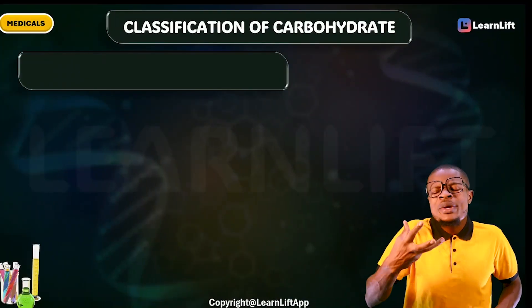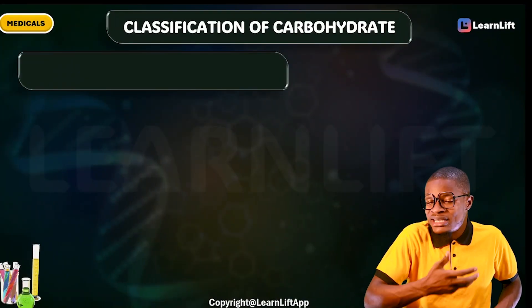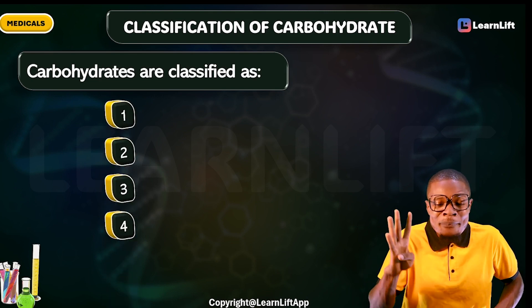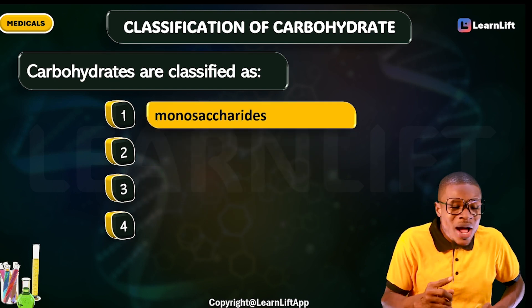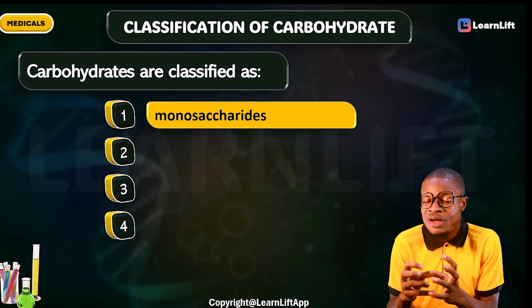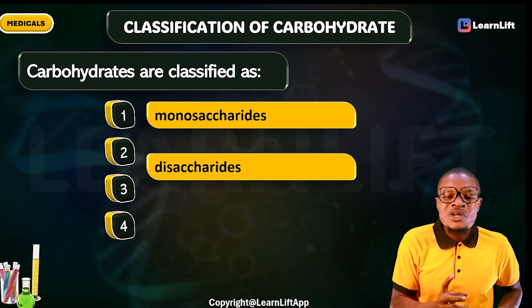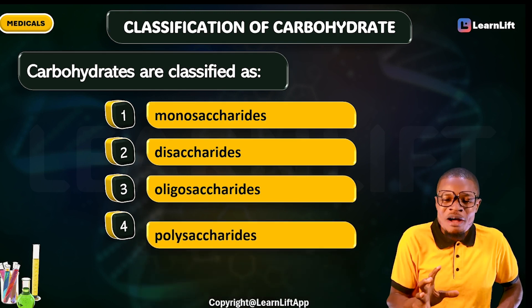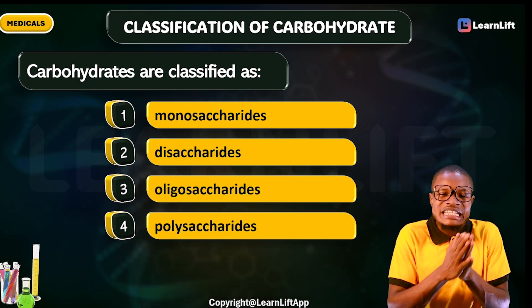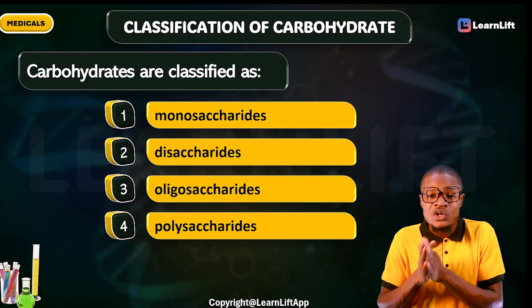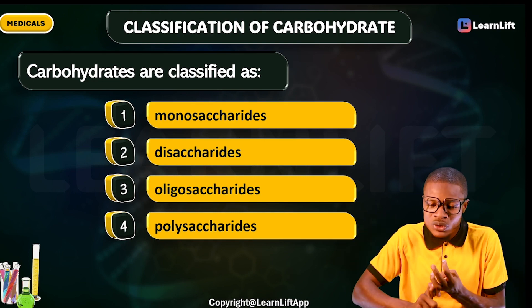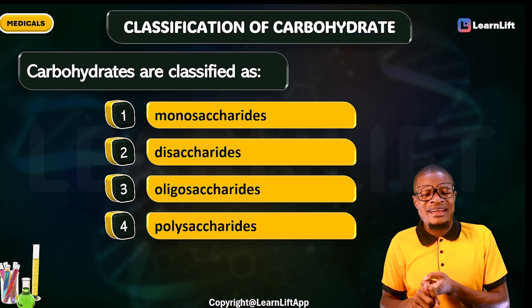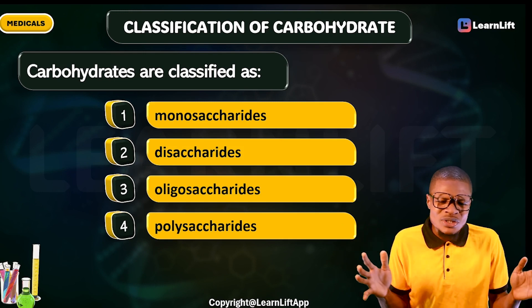How do we classify carbohydrates? There are four major classifications. Number one is monosaccharides — the simplest of them all. Number two is disaccharides. Number three is oligosaccharides. Number four is polysaccharides. These are the four classifications of carbohydrates: monosaccharides, disaccharides, oligosaccharides, and polysaccharides.